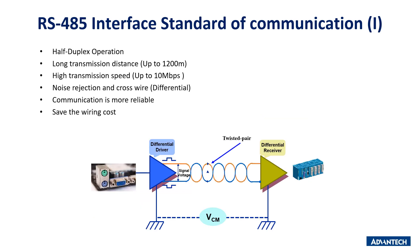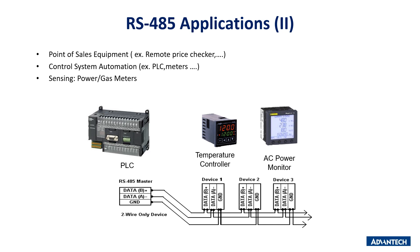For the RS-485 standard, it supports half duplex operation — it can send and receive data but not simultaneously. It has noise rejection using cross-wiring to reduce electromagnetic interference. It supports a long transmission distance up to 1,200 meters at a high transmission speed up to 10 megabits per second, and saves wiring cost because it uses only three wires. RS-485 is widely used in industrial environments including POS systems, automatic control systems, and sensing applications.